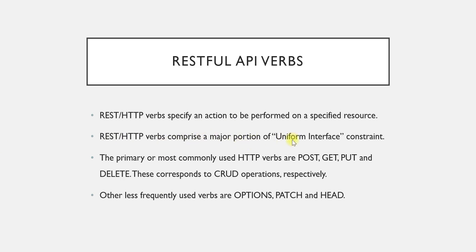The most important thing about HTTP verbs or RESTful API verbs is that they comprise a major portion of the uniform interface constraint. If you remember, at the very beginning of this Web API series I explained the different constraints for RESTful API. Whenever you implement a RESTful API you have to follow these constraints, and one of them is uniform interface. Interface basically means you are trying to interact with a specific device or thing through a medium.